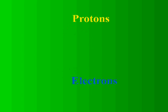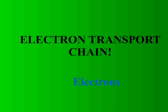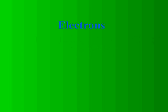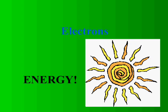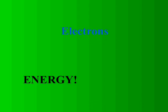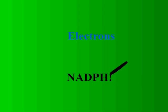The plant then rips apart the hydrogens into protons and electrons. It gets rid of the protons immediately, while the electrons enter the electron transport chain. Basically, the electrons dance through a bunch of chemical reactions that give off energy. Light is required to start off these chemical reactions, so that is why they are called the light reactions. The energy given off throughout these reactions is used to create ATP. In the last reaction, the electron gets attached to NADPH, the electron carrier.